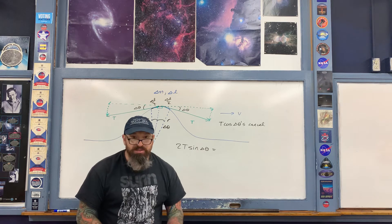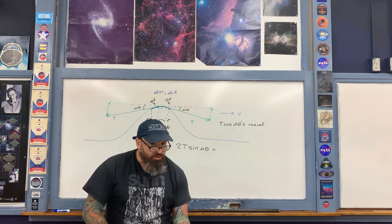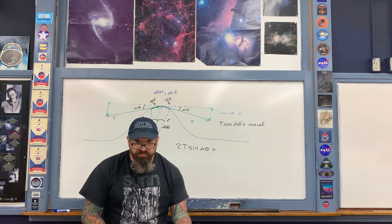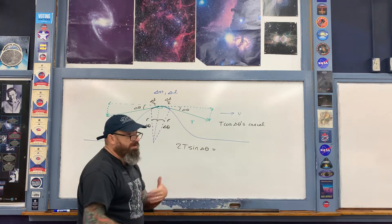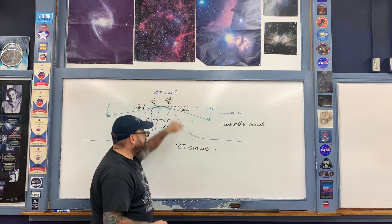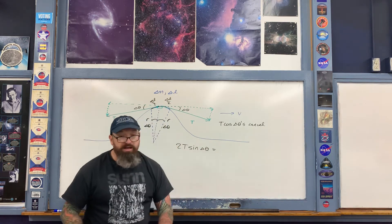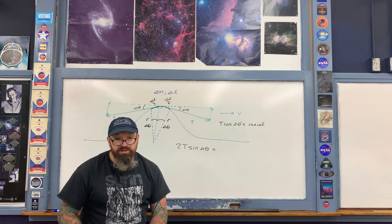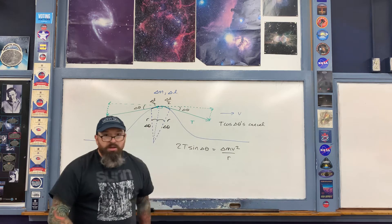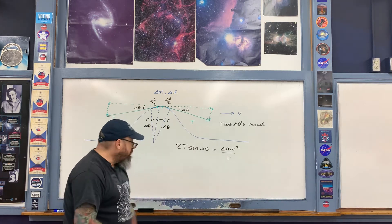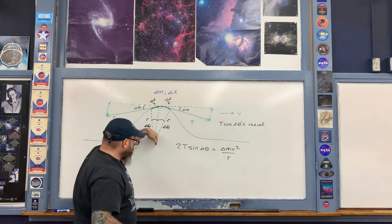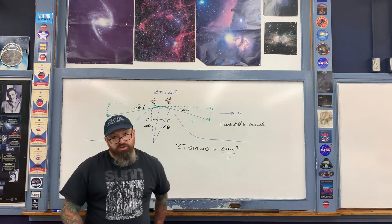So 2T sine delta theta equals mass times acceleration. The acceleration is a centripetal acceleration, because as the pulse propagates through the spring, the delta m mathematically behaves as if it's tracing out a circular arc of length delta l. So on the right-hand side of the expression, I write ma as delta m times v squared over R. This equals mass times centripetal acceleration, and now we solve for the speed v.